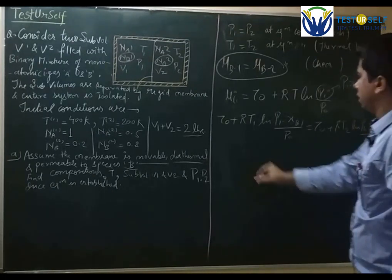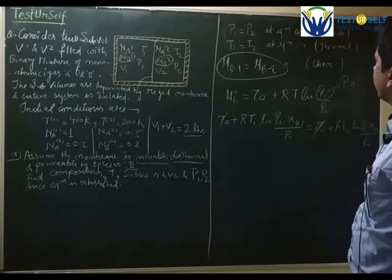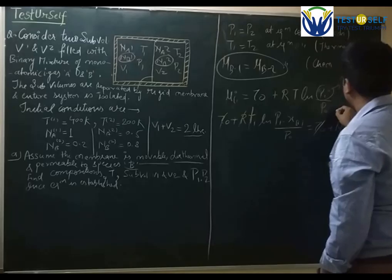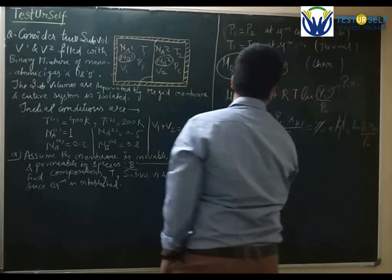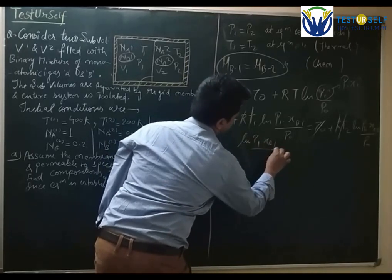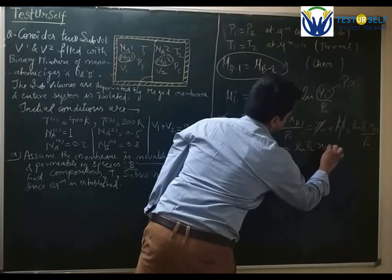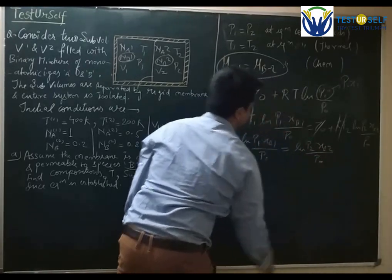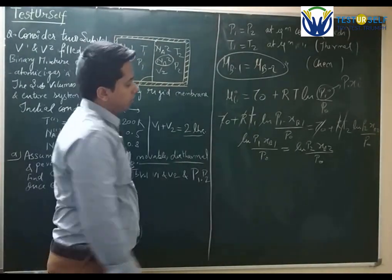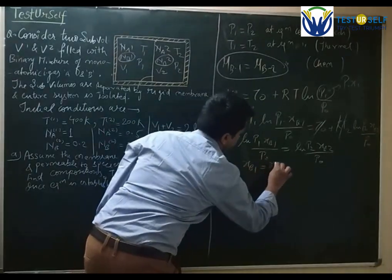The P0 terms cancel out, and tau-naught cancels. Since T1 equals T2 at equilibrium (diathermal boundary), and R cancels, we are left with ln(P1·xB1) equals ln(P2·xB2). Taking the antilog of both sides, and since pressure is also equal, it comes out to xB1 equals xB2.